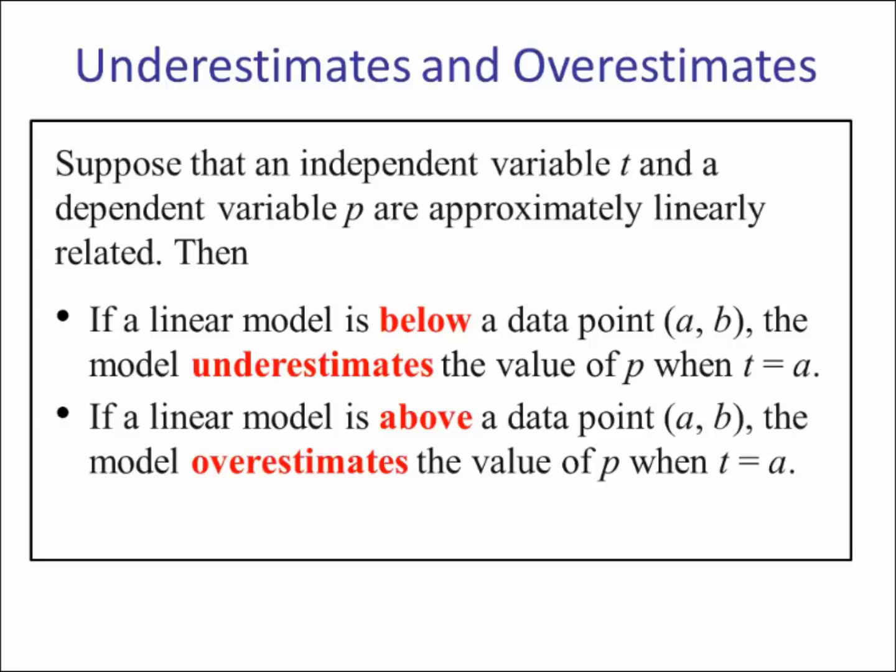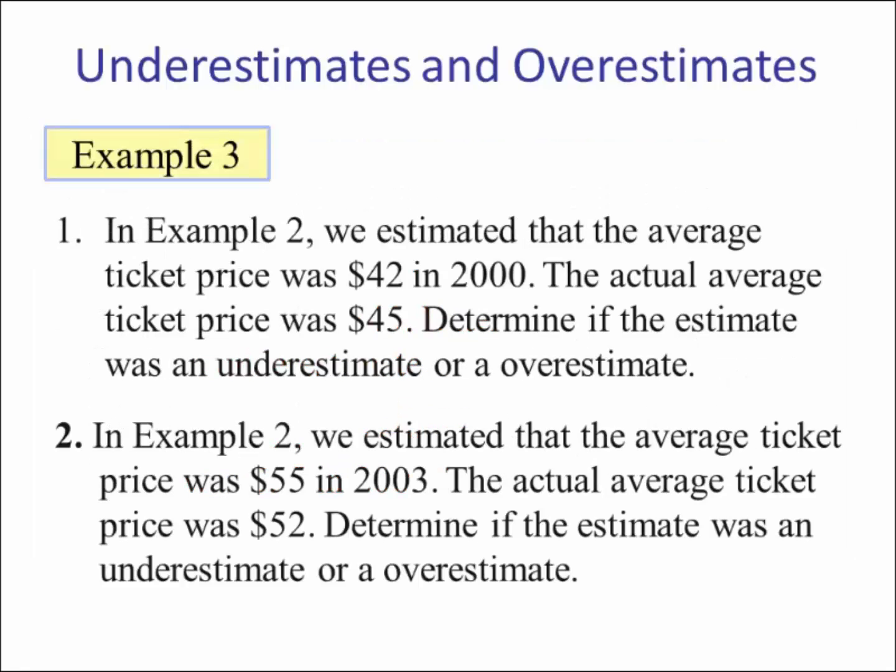Now this sounds very confusing, but we'll look at an example and this will make more sense. In example two, we estimated that the average ticket price was $42 in 2000. The actual average ticket price was $45. Determine if the estimate was an underestimate or an overestimate. Number two, we estimated the average ticket price was $55 in 2003. The actual ticket price was $52. Determine if this estimate was an underestimate or overestimate.